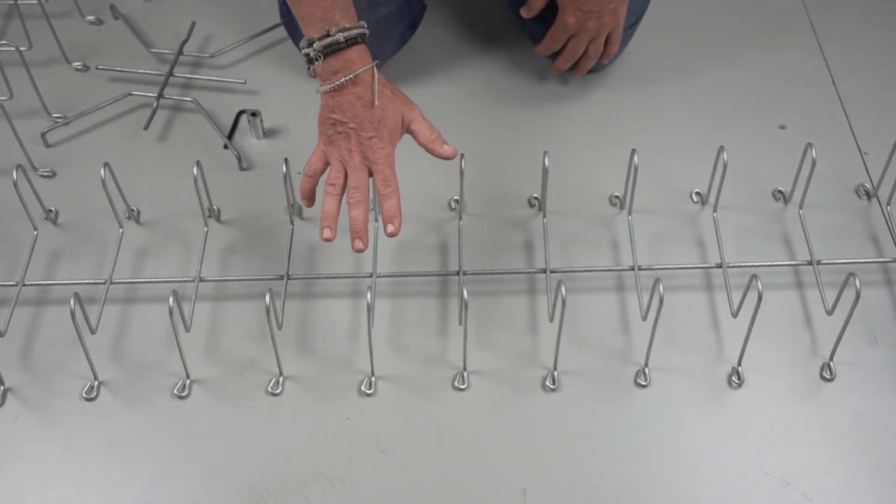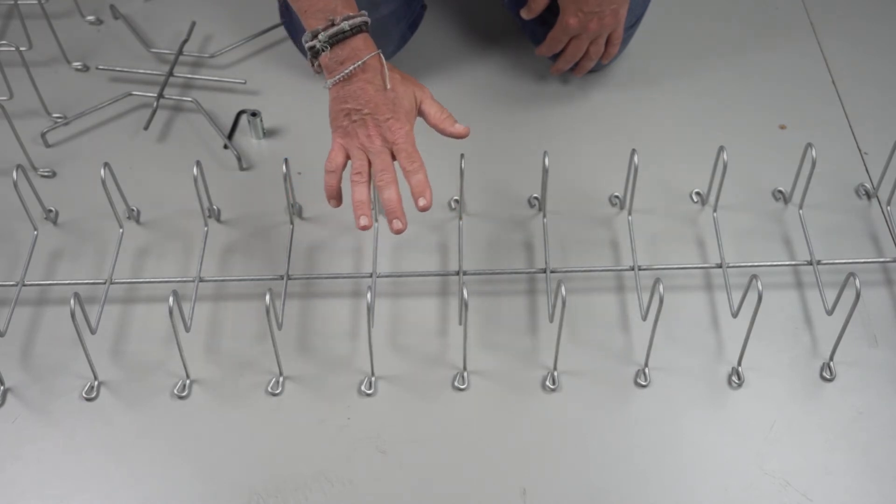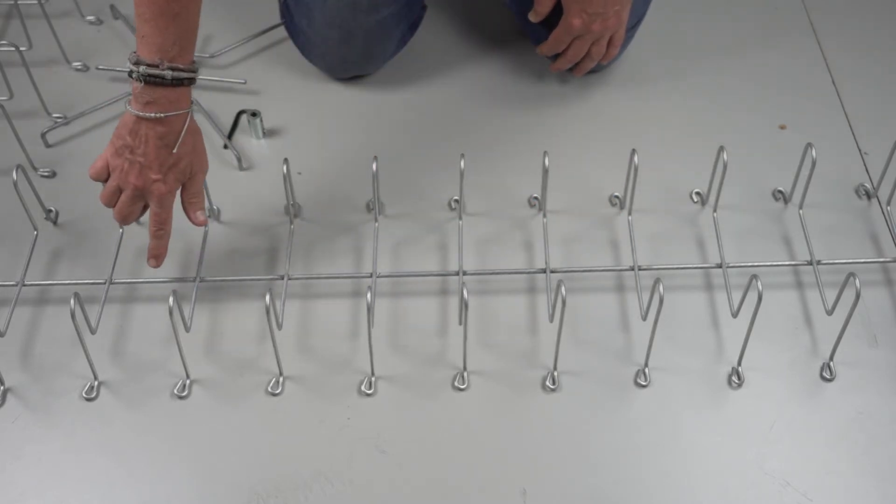The really cool feature about the 101 series tray and just like all the other linear cable trays that Snake Tray produces is its single spine design.